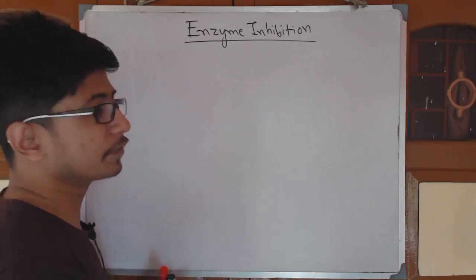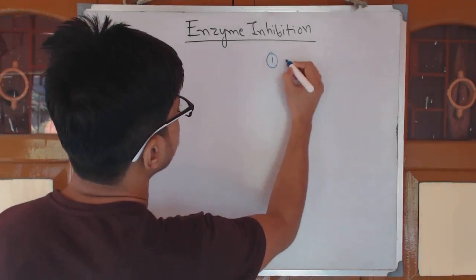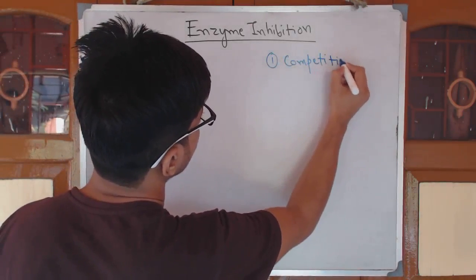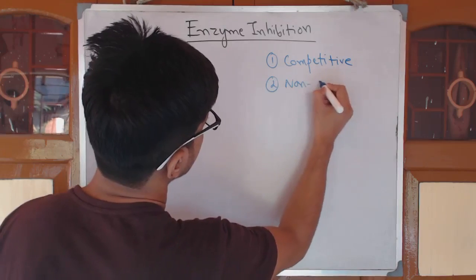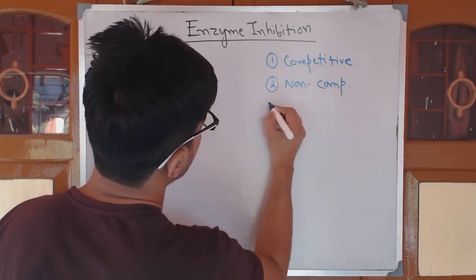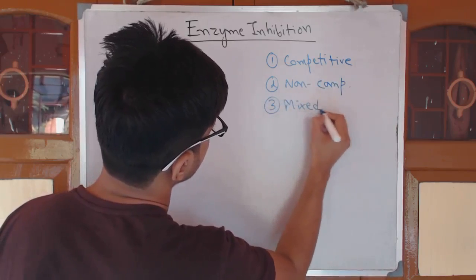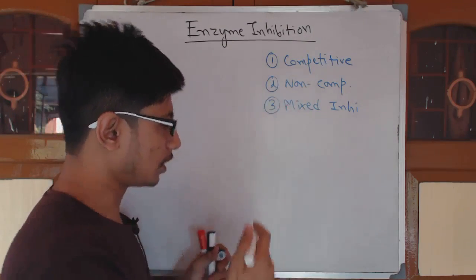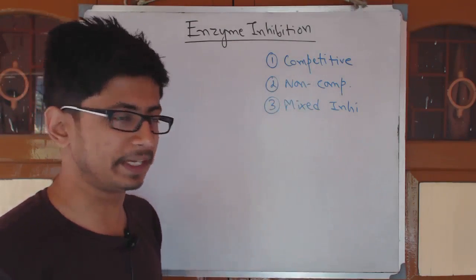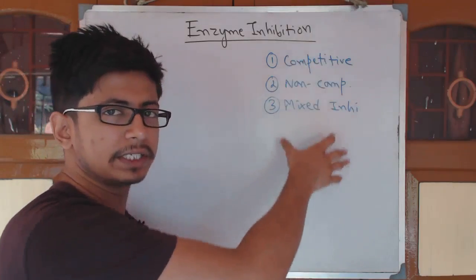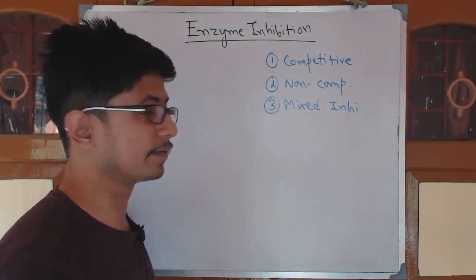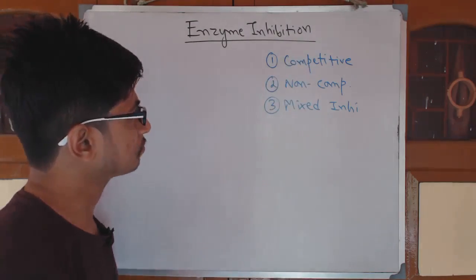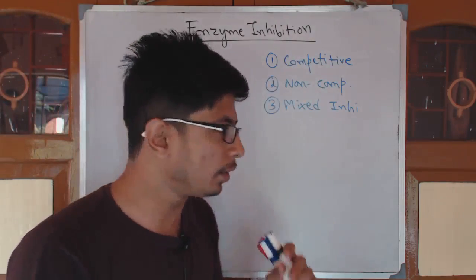The major three types of inhibition we want to focus on are competitive inhibition, non-competitive inhibition, and mixed inhibition. I'm not going to talk separately about the details of each type — I have separate videos for that — but here you need to know what the differences are between these three.